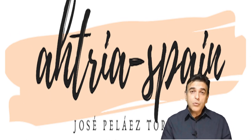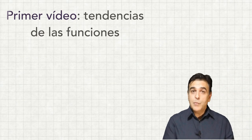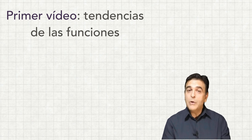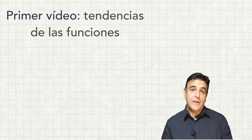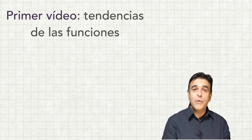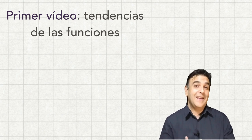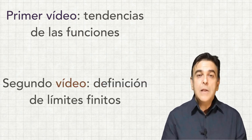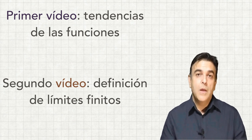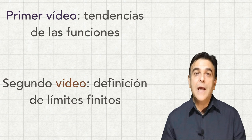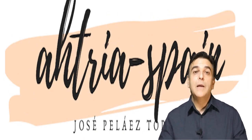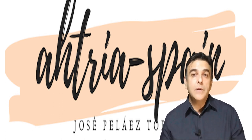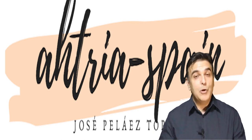Resumiendo lo que llevamos del curso de límites: en primer lugar vimos un vídeo sobre las tendencias en una función, qué ocurre cuando sustituimos valores alrededor de un número por la derecha y por la izquierda. En segundo lugar, hemos visto la definición de límites finitos. El siguiente paso sería establecer las pautas para la definición de límites en el infinito: qué ocurre cuando x tiende a un número y la función se va al infinito, al menos infinito, etc. Pero eso será en el siguiente vídeo.